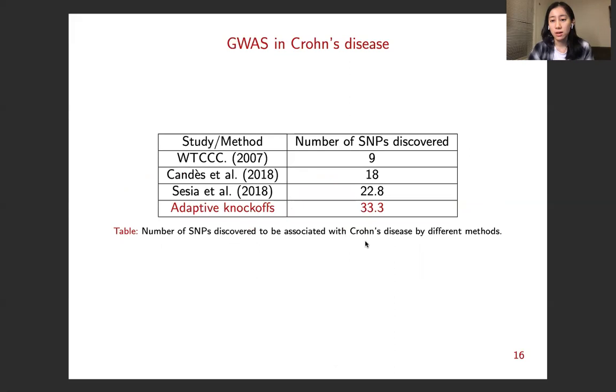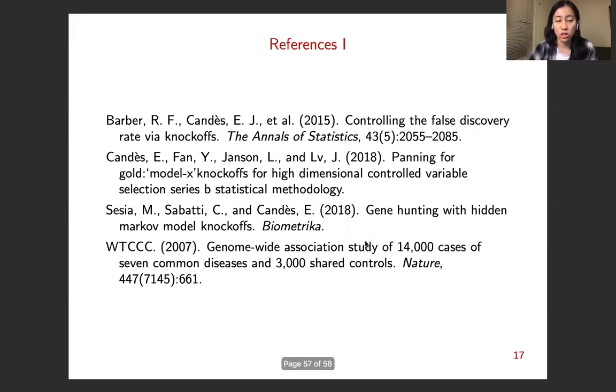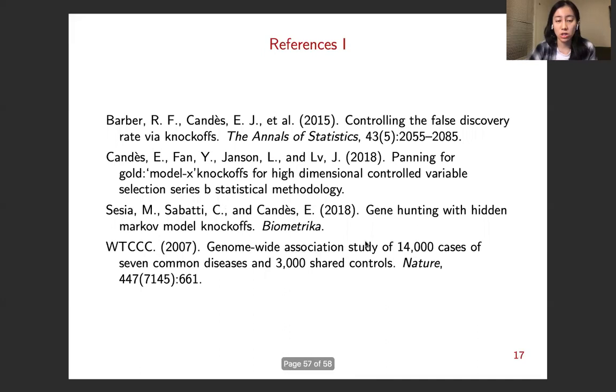So our procedure discovers more number of SNPs than other competing methods. So it illustrates the advantage of utilizing side information. This concludes my talk, and here are a few references. Finally, our paper is available online. Interested audience can go to this website and check out our paper. I'm also happy to answer questions in the discussion session. Thank you so much for your attention.